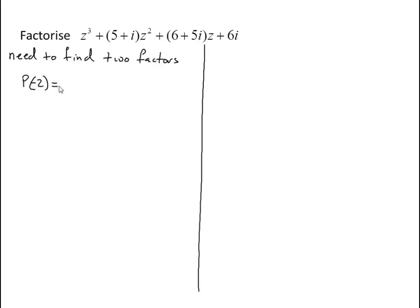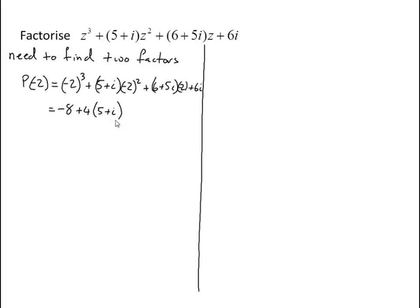I'm going to try minus 2. So: minus 2 cubed, plus (5 plus i) times minus 2 squared, plus (6 plus 5i) times minus 2, plus 6i. That gives me minus 8 plus 20 plus 4i minus 12 minus 10i plus 6i. I reckon that's all going to equal 0.